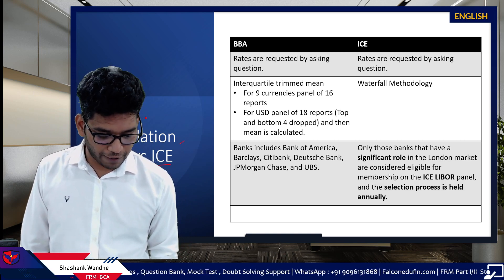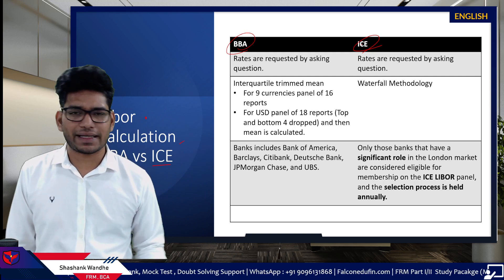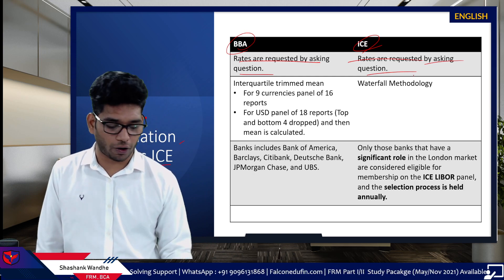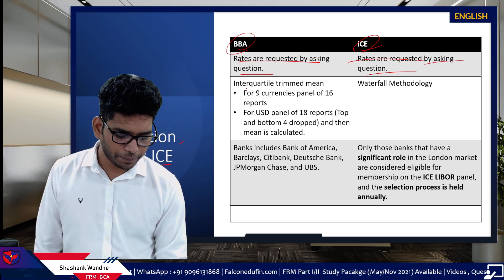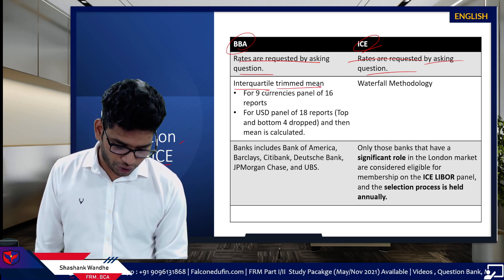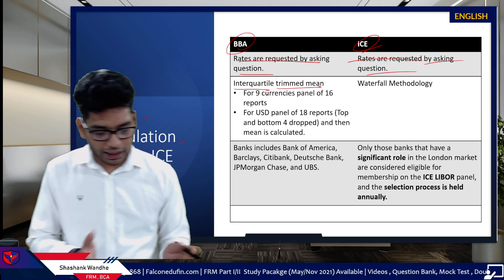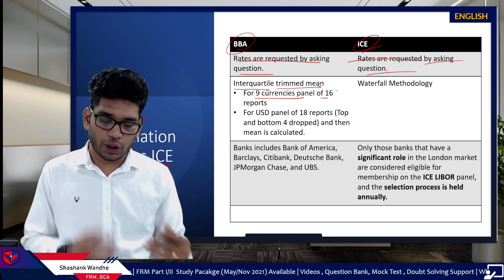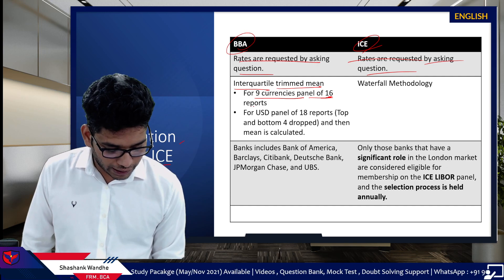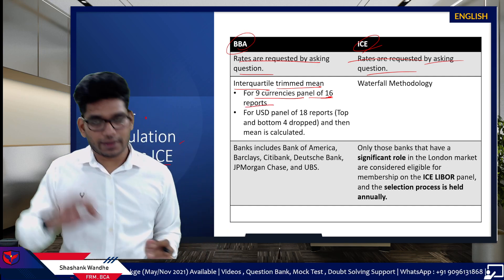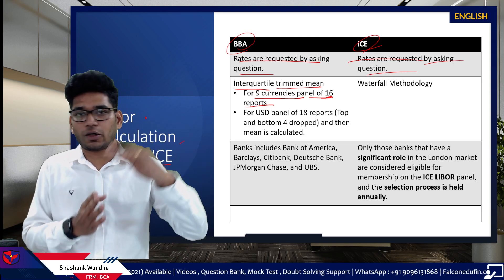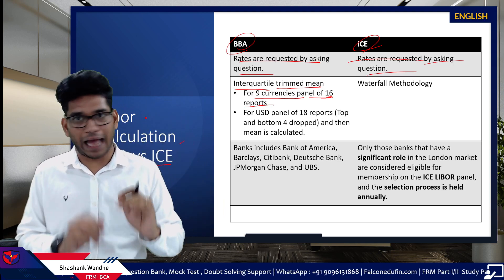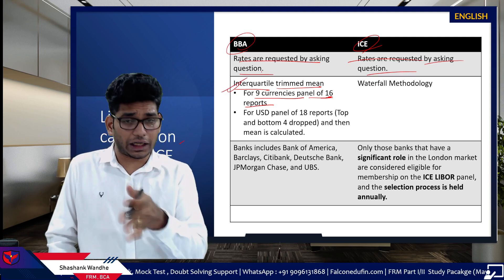The LIBOR calculation: BBA versus ICE. The basics are the same — rates are requested by asking questions. In the BBA, the interquartile trimmed mean methodology was used. For the panel of 16 banks covering nine currencies, they would drop the top four rates and bottom four rates, then take the average of the remaining — that's why it's called the interquartile trimmed mean.